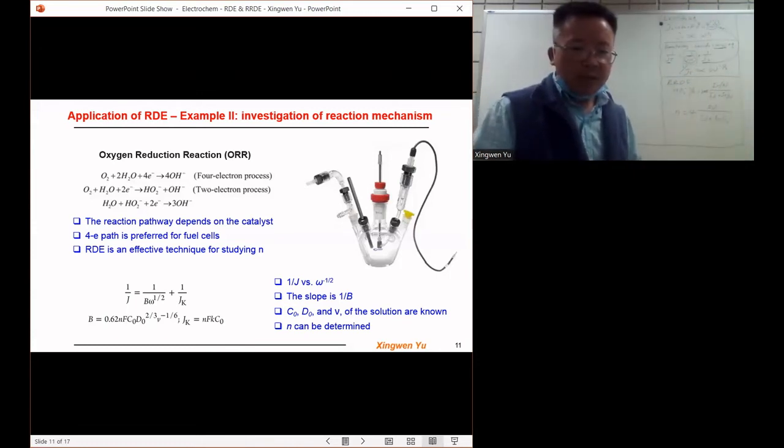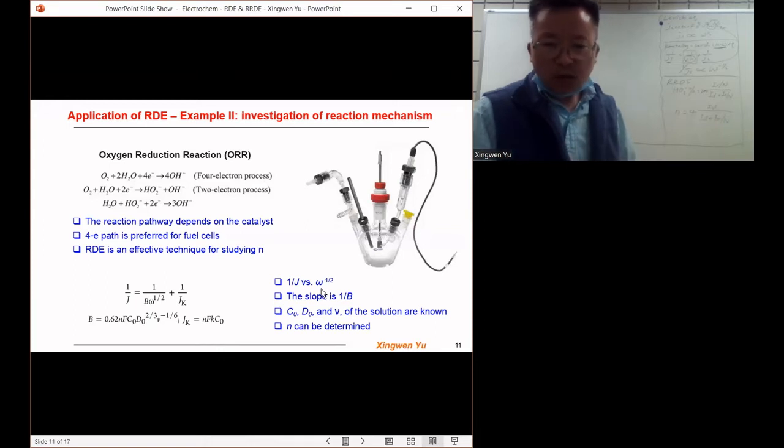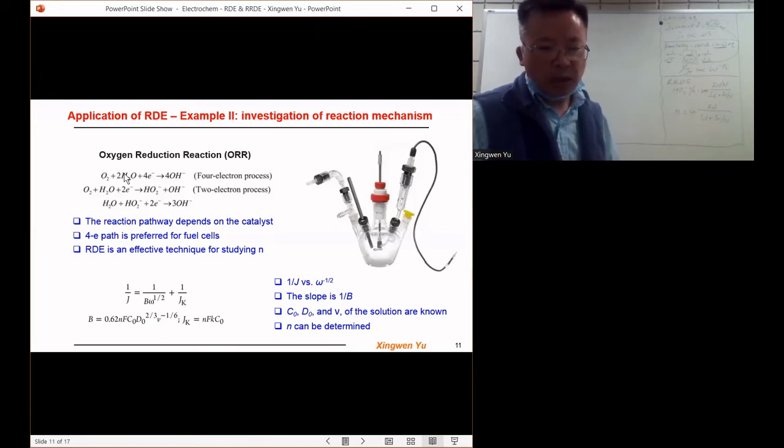As we discussed just now, if we plot the one over j versus one over square root of the omega, we'll be able to get a straight line, and from the slope we'll be able to calculate the charge transfer number n.